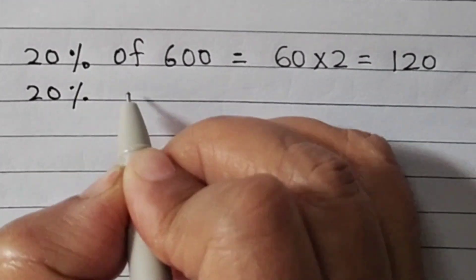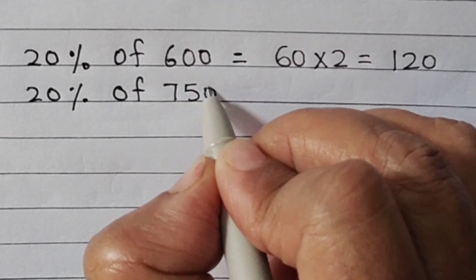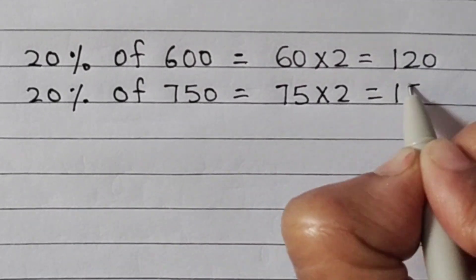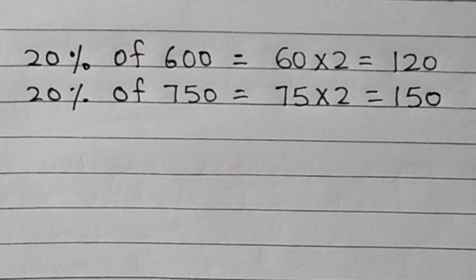20% of 750. 10% was 75. 75 multiplied by 2 is 150. So 20% of 750 is 150.